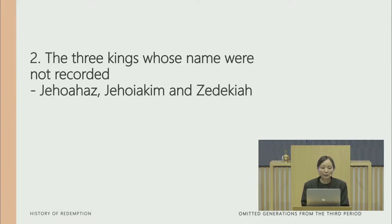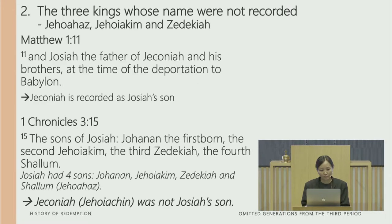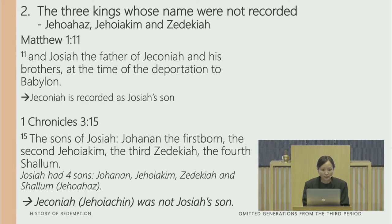Secondly, we look at the three kings whose names were not recorded: Jehoahaz, Jehoakim, and Zedekiah. In Matthew chapter 1, verse 11, we see: 'and Josiah, the father of Jeconiah and his brothers, at the time of the deportation to Babylon.' Jeconiah is recorded as Josiah's son. But in 1 Chronicles chapter 3, verse 15, the sons of Josiah are listed: Johanan the first, Jehoakim the second, Zedekiah the third, and Shallum the fourth.